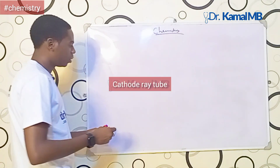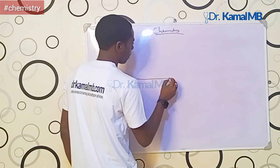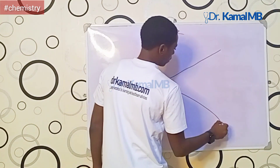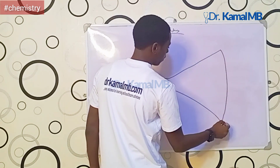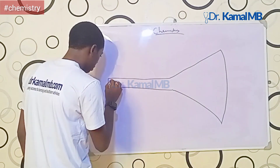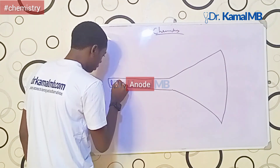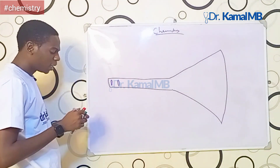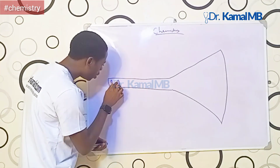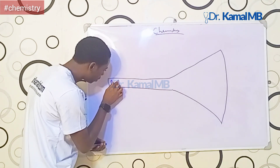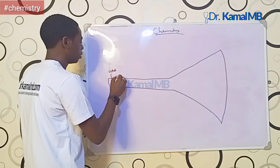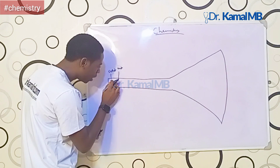So assuming this is the cathode ray tube — he placed his cathode here and his anode here, as we discussed in our last lecture. In order to find out whether they have mass, where they came from, and whether they have charges, JJ Thomson created a small hole here in this anode.